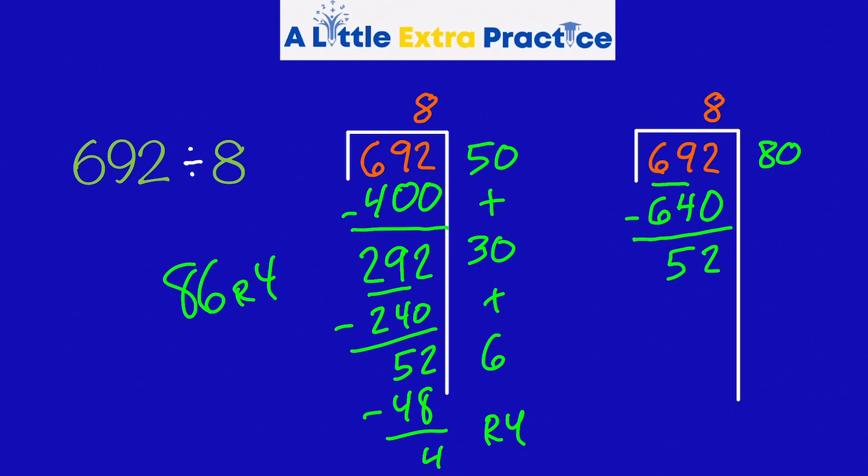That seems familiar. 8 times 6. It's still 8 times 6. 48. Subtract. And I have 4, remainder 4. And if you look, I'll have 86, remainder 4. Two different ways to get the exact same answer. Both ways work. Let's do one more.